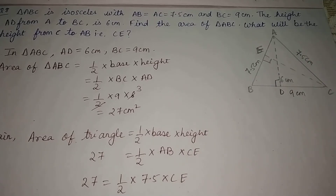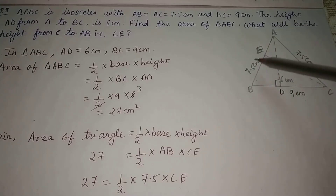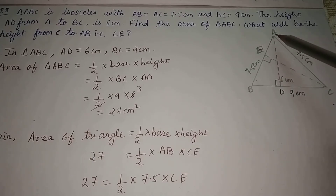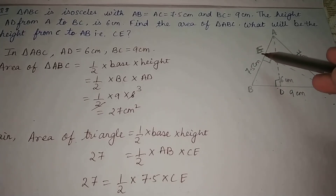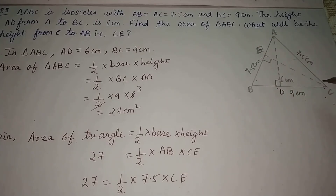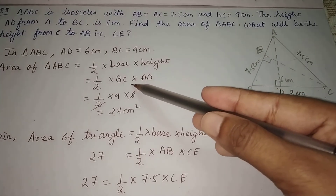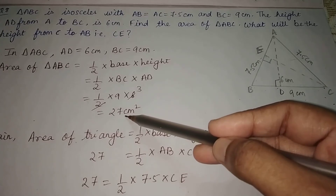Now triangle ABC is an isosceles triangle — in an isosceles triangle two sides are equal and the third side is different. Here AB equals AC equals 7.5 cm, and BC equals 9 cm. Height AD is 6 cm. To find the area: area of triangle equals half times base times height, that is half times BC times AD, giving 27 cm².